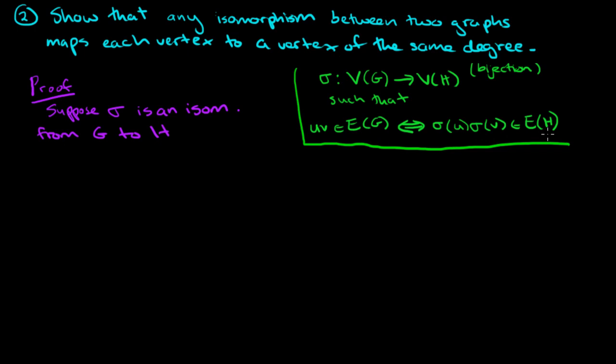So this is just to remind us of the definition of an isomorphism. So here we have sigma—it is an isomorphism from one graph to another graph. What we want to do is show that each vertex of G gets mapped to a vertex in H which has the same degree. So we're going to take any vertex of the graph G.